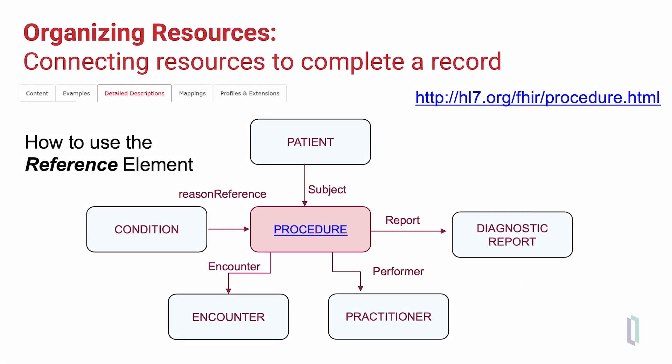Let's use the FHIR procedure resource as an example of how we might connect resources together to represent a use case for an individual patient. The FHIR procedure resource would include the identity of the procedure, who performed it and when, and that procedure would reference the patient who is the subject of the procedure, the condition that is the reason for the procedure being performed, the encounter within which the procedure was performed, the practitioner who performed the procedure, and a diagnostic report that would occur as a result of the procedure — all of those being separate FHIR resources that are linked to the procedure resource by server references.